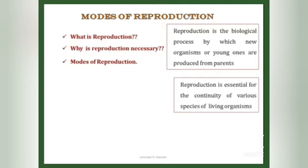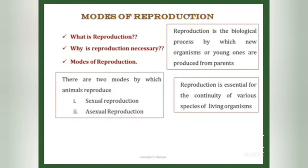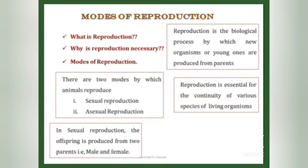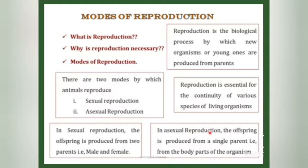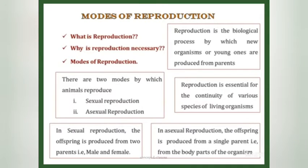Reproduction is necessary for the continuation of organisms generations after generations. There are two modes of reproduction — two ways by which animals reproduce. The first is sexual reproduction, in which the offspring is produced from two parents: a male and a female. In asexual reproduction, the offspring is produced from a single parent, from the body part of an organism.